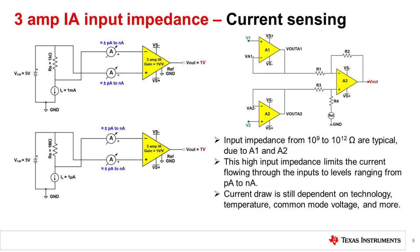While this current draw is low, it is still dependent on technology and could vary across temperature, common mode voltage, and more. But it still remains that the 3-amp IA is able to process these current measurements without needing to adjust or add resistors.